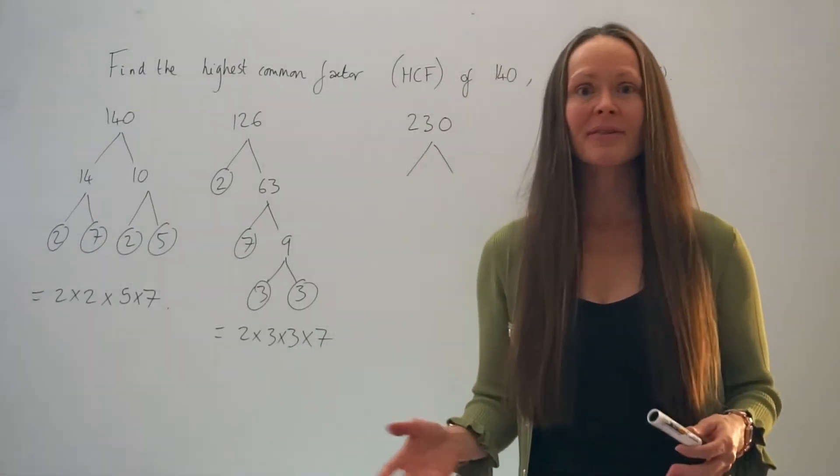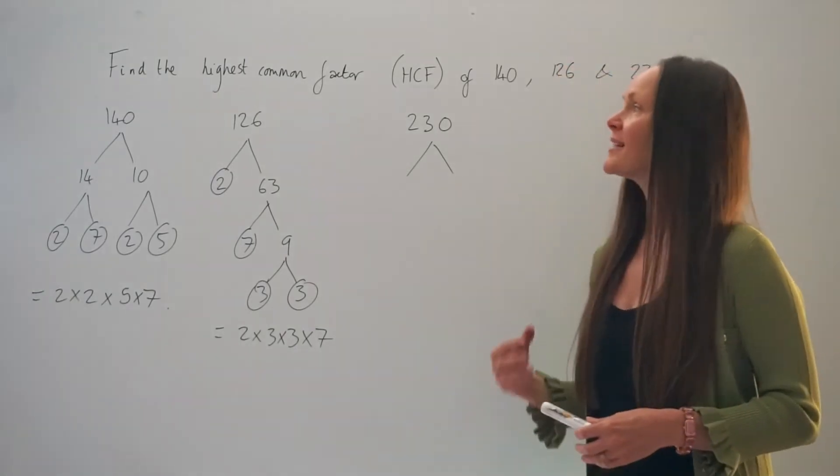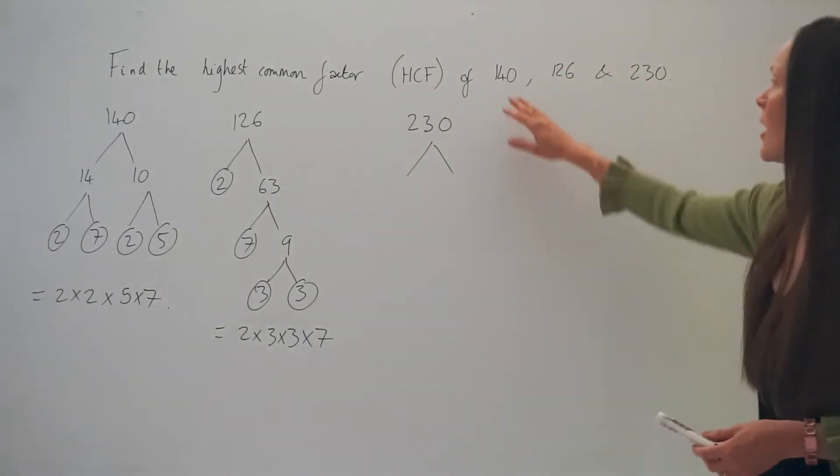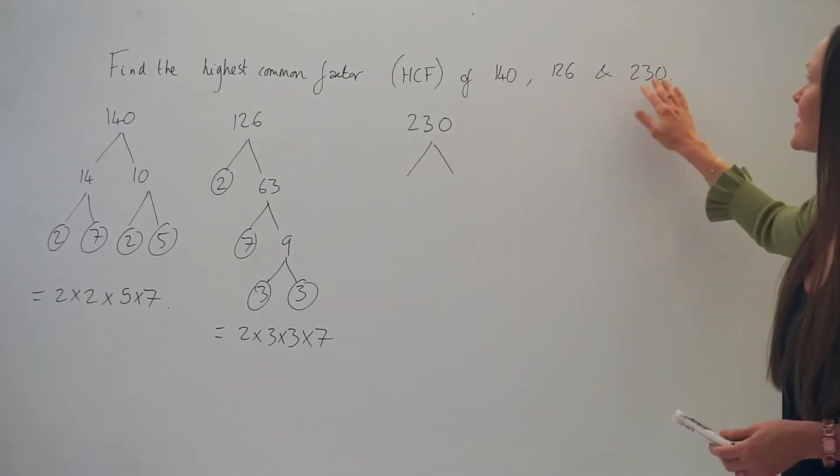I'm going to use the same method as I used in part 1, except this time we have to find the highest common factor of three numbers: 140, 126, and 230.